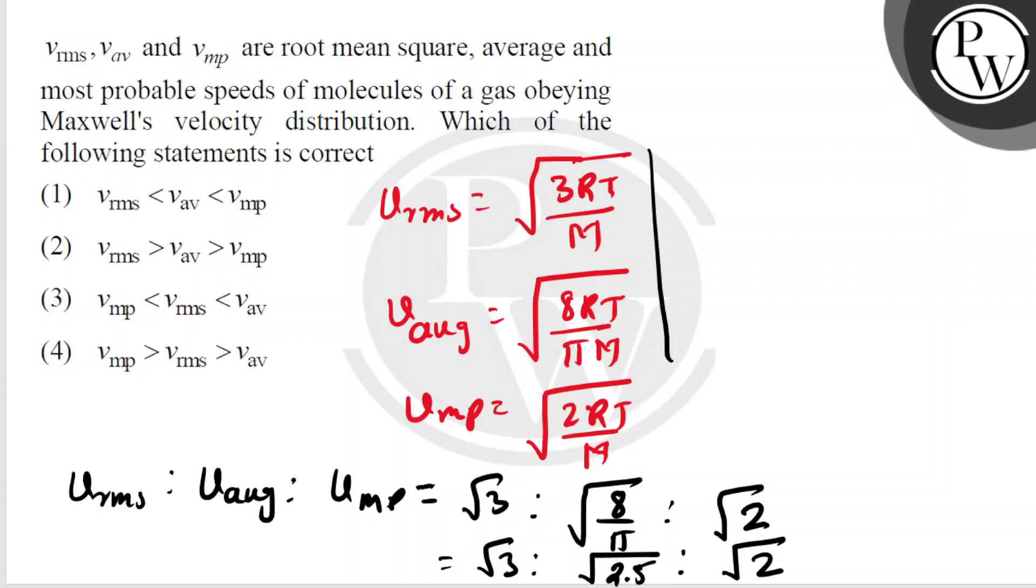So here we can say vrms is the greatest, after that is vaverage, and after that is vmost probable.